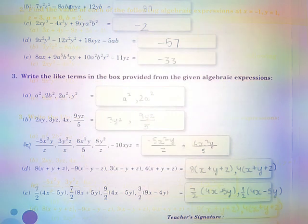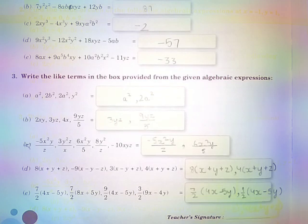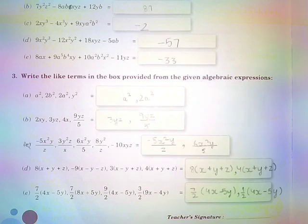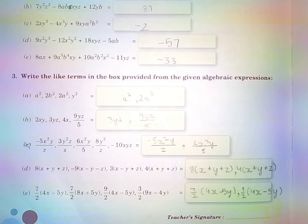Question number 3: Write the like terms in the box provided from the given algebraic expression. Part A: a², 2b², 2a², y² — the like terms are a² and 2a².